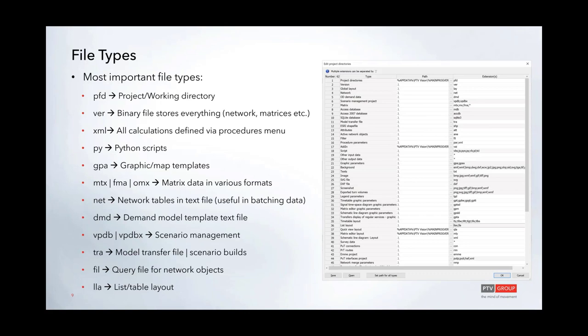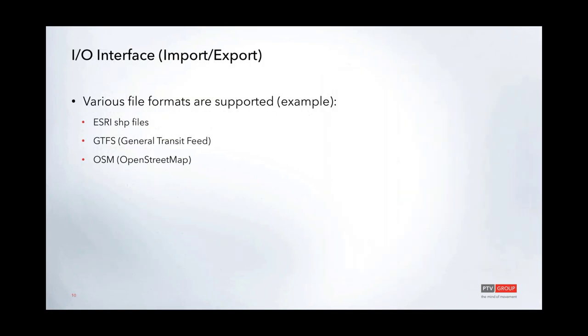Now let's go over the IO interface and look at how some of these work. vZoom supports many different file types for import and export. Common file types you might encounter include ESRI shapefiles for zonal or link data, GTFS files for transit scenario editing and stop data, and Open Street Map files for detailed transport networks.